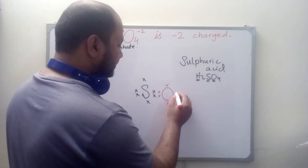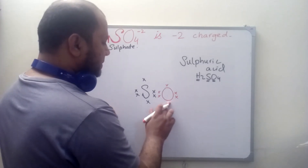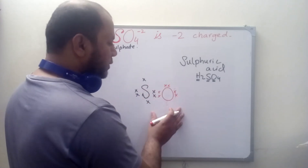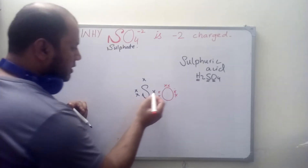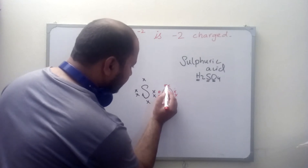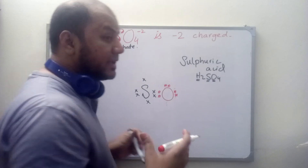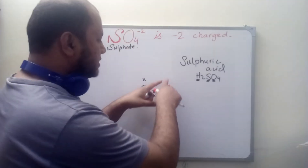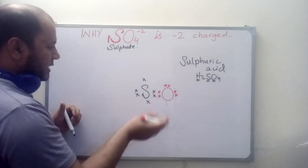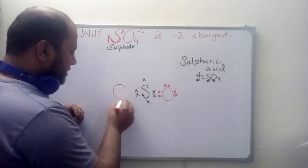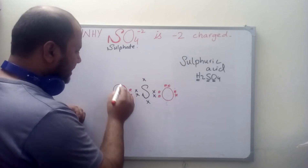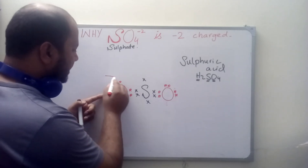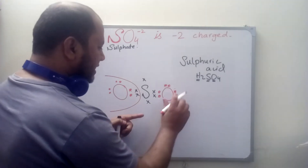Two electrons are being shared by oxygen and sulfur. If we go for the geometry, we will write electrons in this way. You can use dots as well — Lewis structures require that if you draw a cross for one atom, you draw dots for the other. So these six electrons are drawn as dots. Now we have another oxygen atom also containing six electrons, and after sharing two electrons, it contains eight — completing the octet.